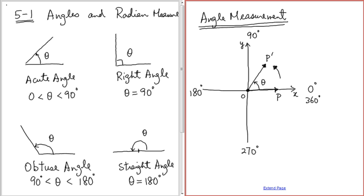So indeed, this is how we define it: one full rotation equals 360 degrees. So one whole piece of pie and we chop it into 360 equal parts — each part we call one degree.